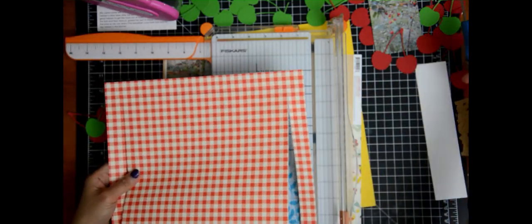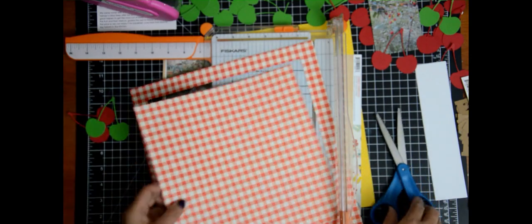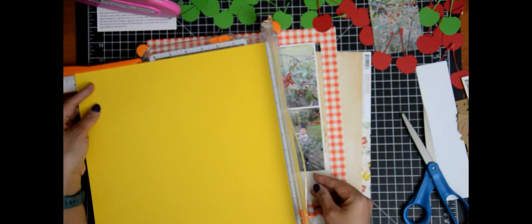So I am going to start off with this paper that looks like a picnic tablecloth and that's going to be the very edge of my paper.